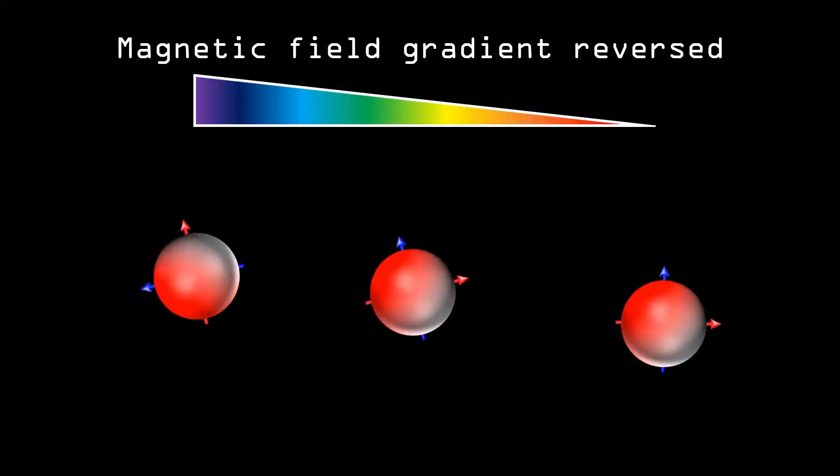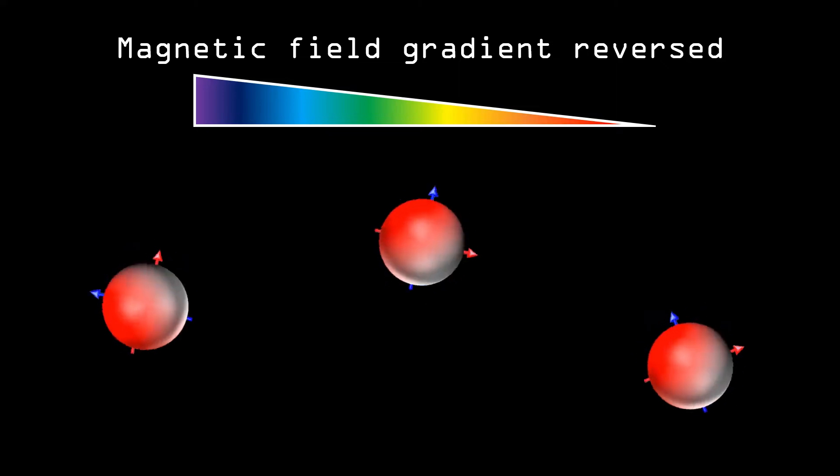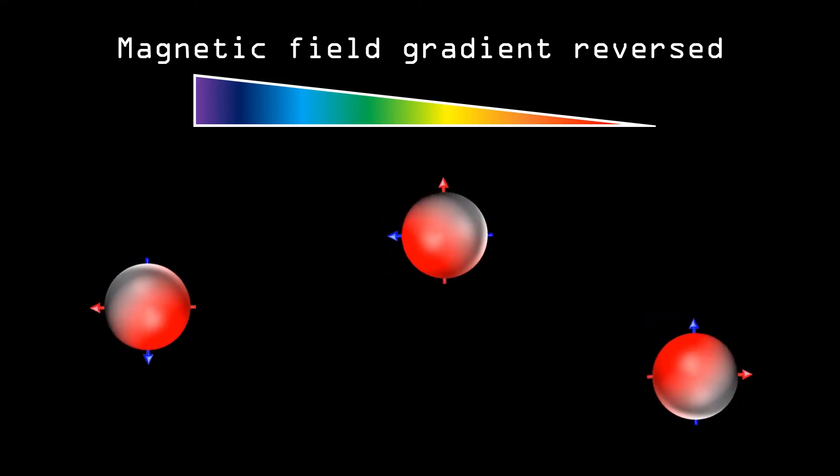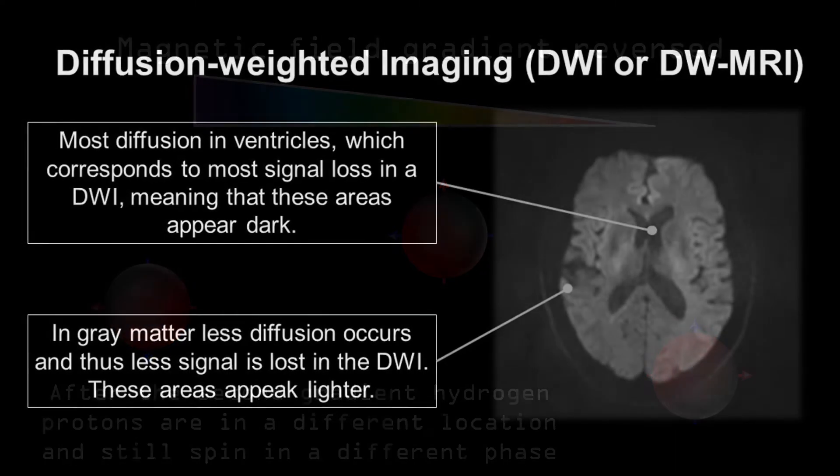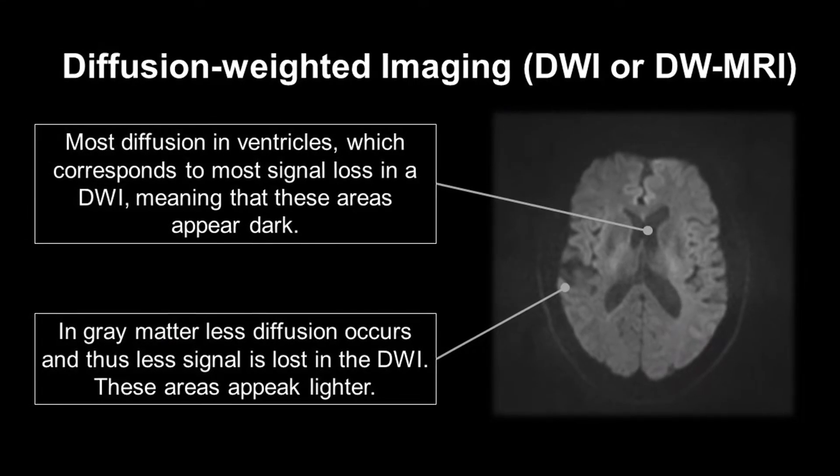That means, the second gradient does not nullify the effects of the first gradient. So that means that protons will be in a different location and spin in a different phase. And this will lead to a decreased signal. Therefore, in places where protons can move freely, such as in the ventricles, the signal is very low.